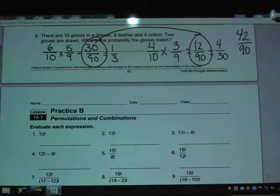42 over 90 reduces to 7 over 15. So you've got a 7 out of 15 chance of pulling 2 of the same type of glove. 7 tries out of 15 total.